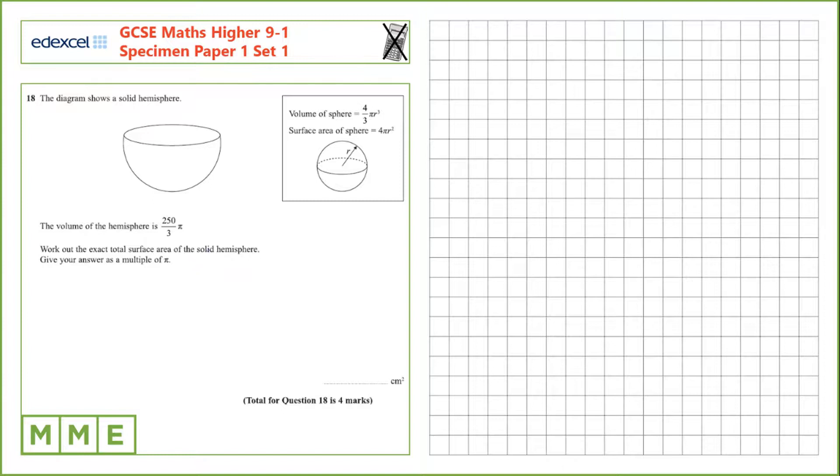In order to do that we're going to need to know the radius and we can work that out from here. So, 250 over 3 pi is equal to the volume of the hemisphere. If the volume of the sphere is 4 thirds of pi r cubed, the volume of a hemisphere is half of that which is 2 thirds pi r cubed.